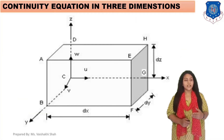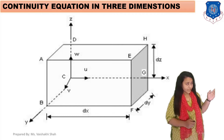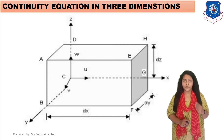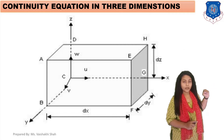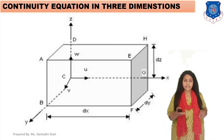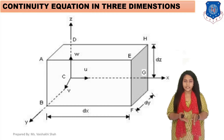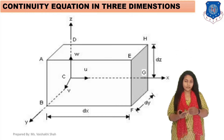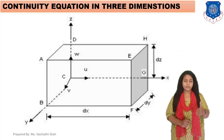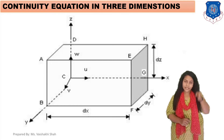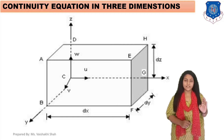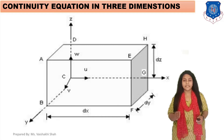Our next topic is the continuity equation in three-dimensional flow. We consider a rectangular block placed in 3D. As shown in the diagram, the x-axis is horizontal, the y-axis is inclined, and the z-axis is vertical. We consider three axes: x, y, and z. The velocity component in the x direction is u, in the y direction is v, and in the z direction is w. So velocities u, v, and w correspond to the x, y, and z directions respectively.